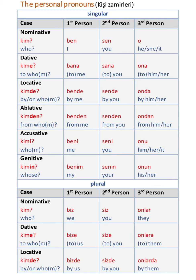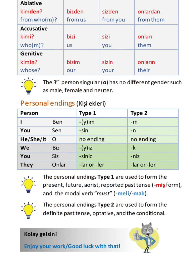Kim, biz, siz, onlar. Kimi, bizi, sizi, onlara. Kimde, bizde, sizde, onlarda. Kimden, bizden, sizden, onlardan. Kimi, bizi, sizi, onları. Kimin, bizim, sizin, onların.